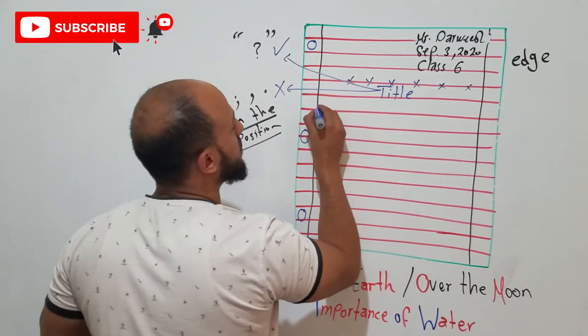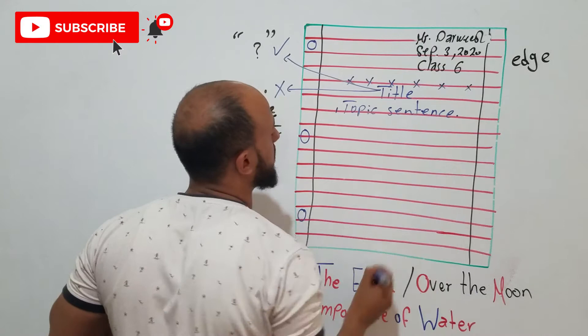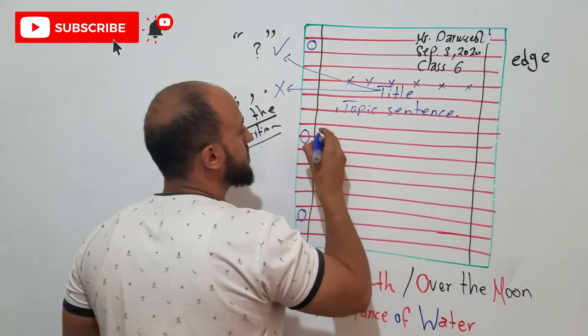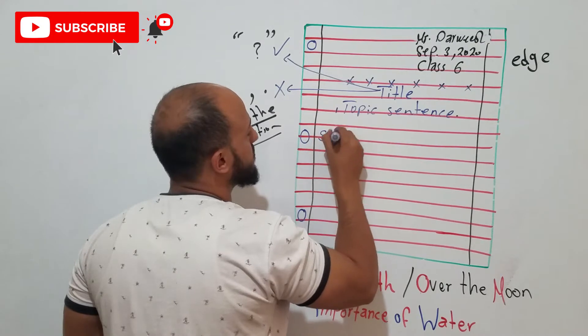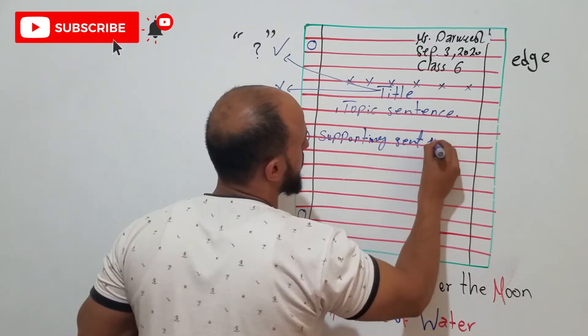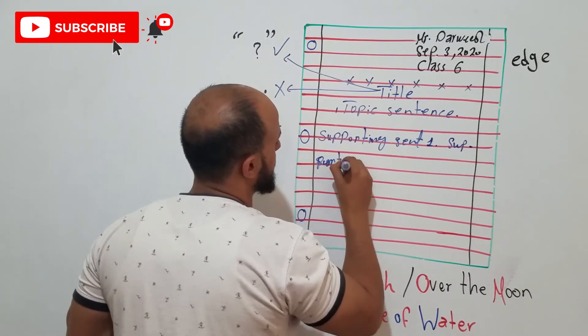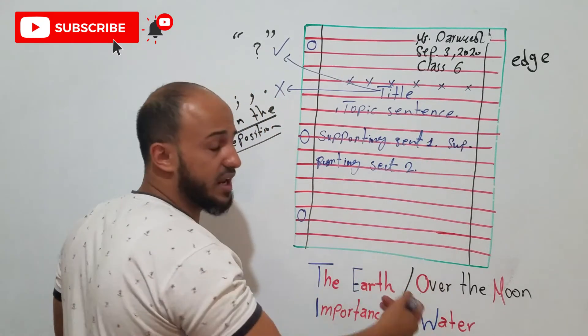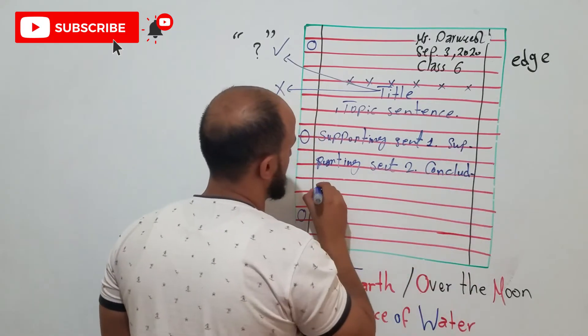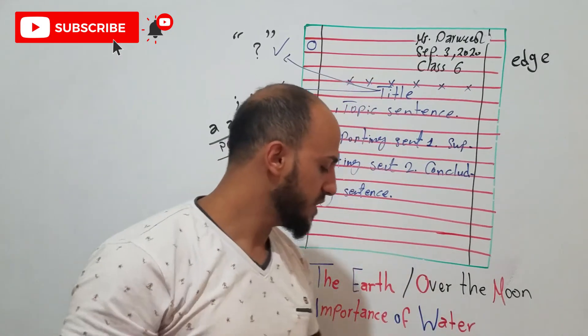And you will write your topic sentence. If you have a space, complete and talk. The second line, don't write on it. Write on this one. So, you will write here your supporting sentence. Sentence one. Then here, supporting sentence two. Then three. After you finish, you will write your concluding sentence. And you'll finish your paragraph.